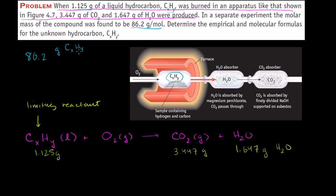They're asking us to determine the empirical and molecular formulas for the unknown hydrocarbon CxHy. The empirical formula is just the simplest whole number ratio of the atoms in our molecules — the simplest ratio of carbons to hydrogens. The molecular formula tells exactly how many carbons and hydrogens are in each molecule. Once we have the empirical formula, we can use the molar mass to figure out the actual molecular formula.